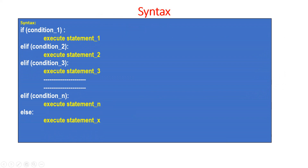You will see the syntax. This is the if-elif-else statement. First we have the if statement with a condition and colon, and with an indentation which shows the scope of the statements under the if block. When the condition is true, the statement under the if block will be executed. Once it is executed, the control will come out of the entire if-else structure. If the if condition is false, then the control will come to the first elif statement and check the condition. If it is true, the statement under the first elif will get executed and the control will come out of the block.